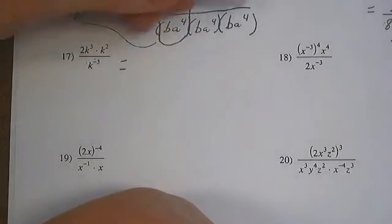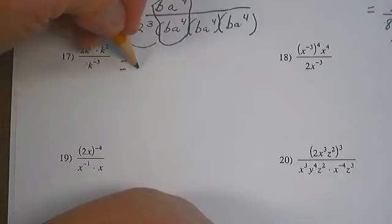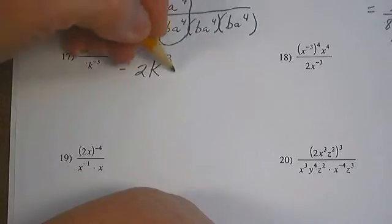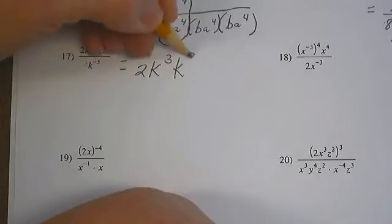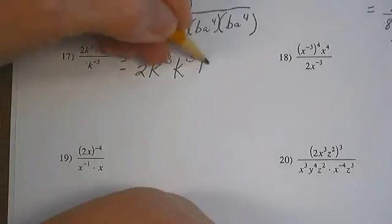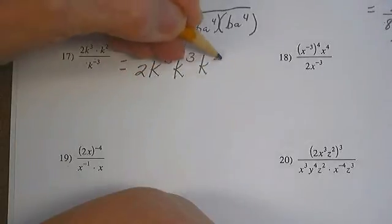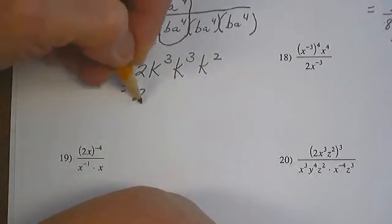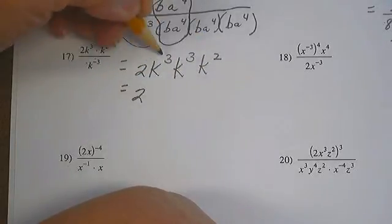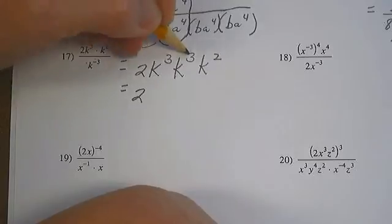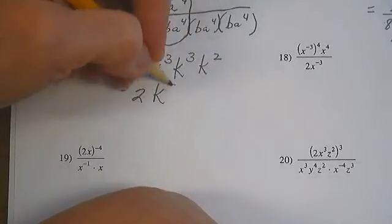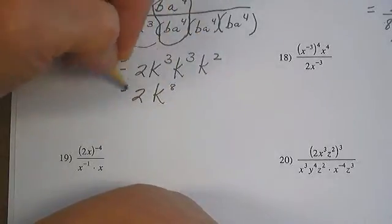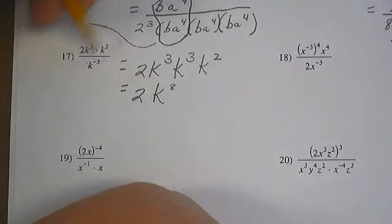If you want to know the real mathematics involved — the number theory — ask me on Monday. So we have 2k cubed, k cubed, k squared, 2 — and 3 plus 3 is 6 plus 2 is 8 — giving us k to the 8th. If you're confused, expand it out.